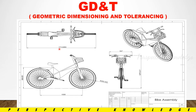Engineering drawings are made with all measurements. If we have a component like a cycle, the dimensions include diameter, distance, height, width, and everything. So if we are using these numbers and arrows visually, it will be easier to identify for manufacturing and production.